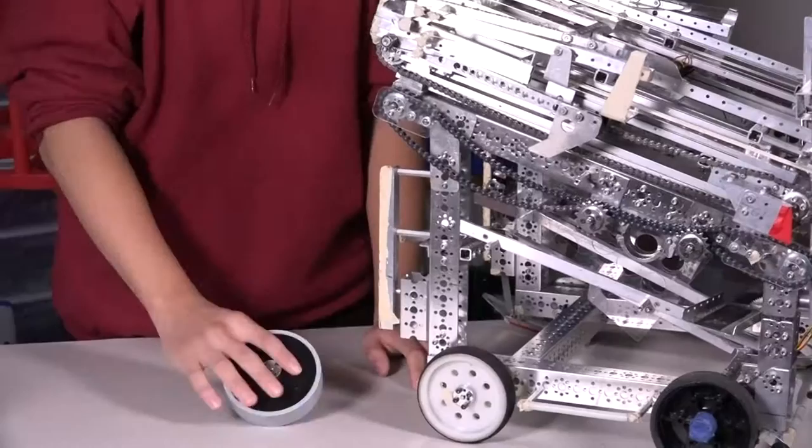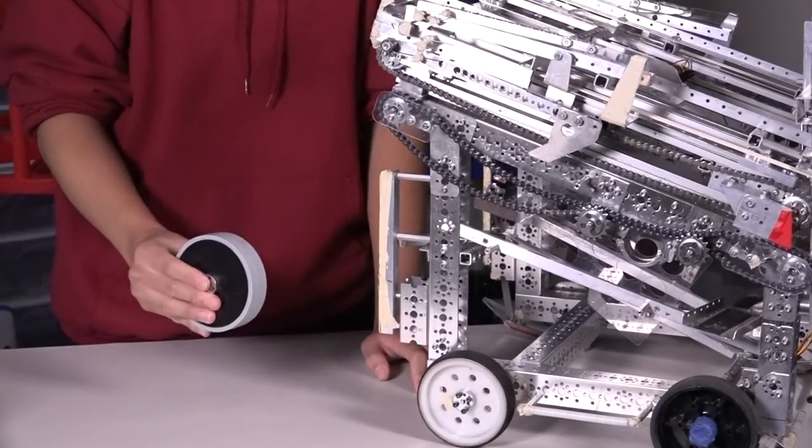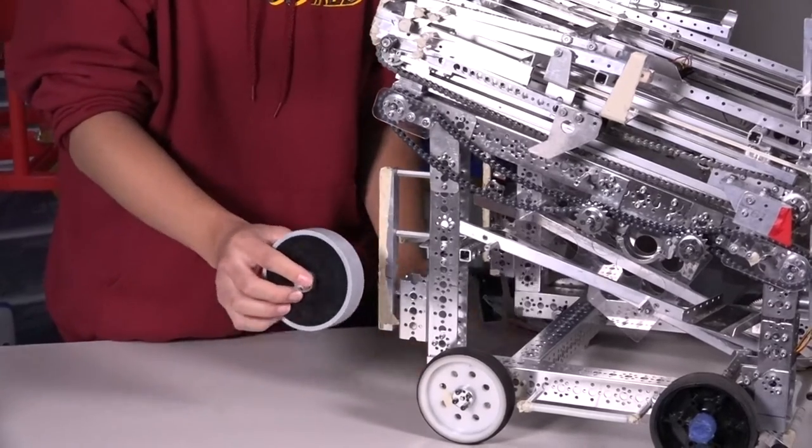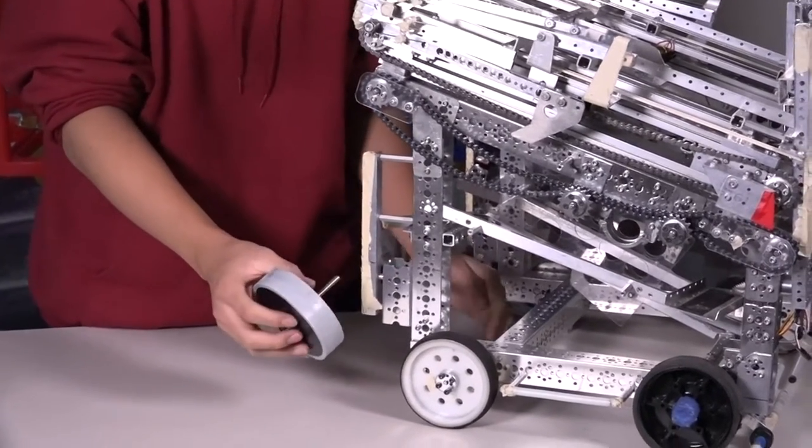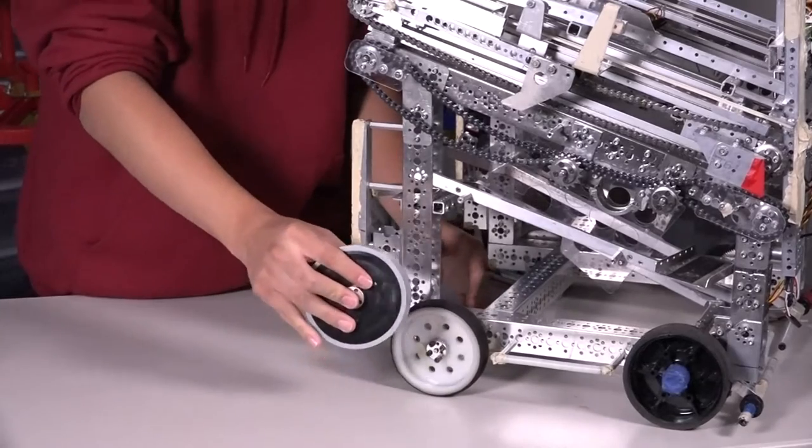Tip number one, you have your typical wheel assembly here but when you're assembling it onto the robots we almost never directly attach the motors to the wheel axles itself.